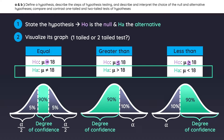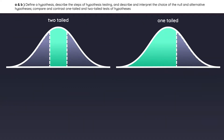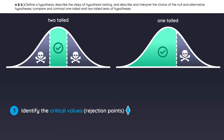So we visualize the graphs — but now what? How do we actually test the hypothesis? Think of the area that contains the degree of confidence as the safe zone. The area in the tails will be the rejection zones. With that in mind, let's move on to step number three: identify the critical values, which are also known as rejection points. The critical values are the points that mark off the area between the safe zone and the rejection zone.